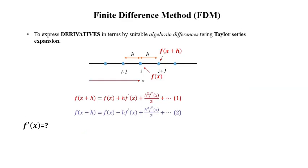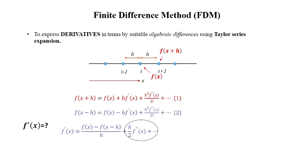Likewise, using equation 2, f'(x) is represented as [f(x) − f(x−h)] / h + h/2 · f''(x) + higher order terms. If we consider only the first term and neglect the higher order terms, this approximation also has a truncation error of order h.